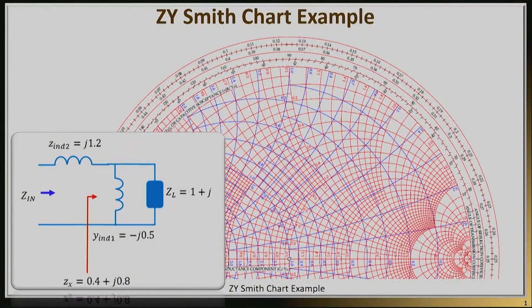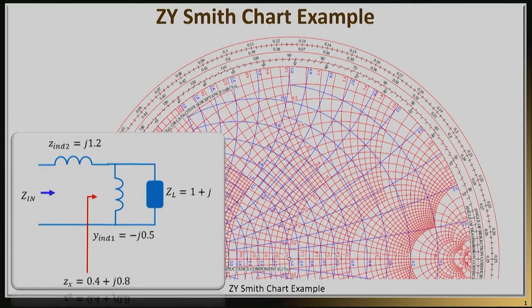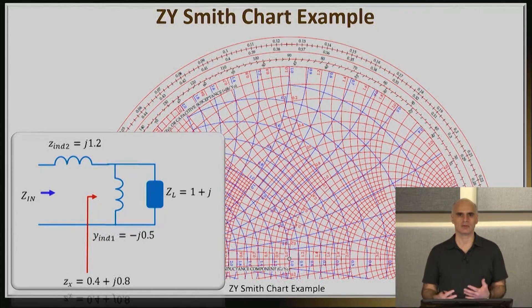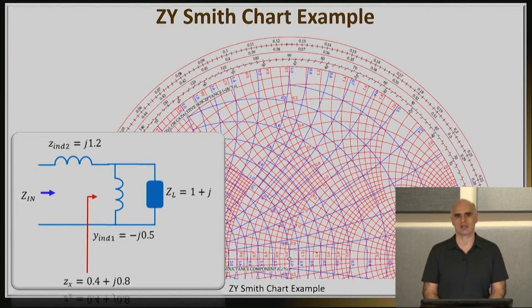Now that we've studied the impedance and admittance Smith charts, I'd like to give you a numerical example using both charts at the same time. Hopefully, this will help you manage how to move along the Smith chart when adding impedances and admittances. This takes practice, so I invite you to follow this video and make simple changes to the example circuit, repeating this until you're comfortable with the operations.